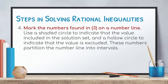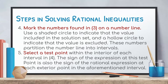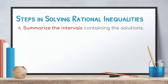Fourth, mark the numbers found in step 3 on a number line. Use a shaded circle to indicate that the value is included in the solution set and a hollow circle to indicate that the value is excluded. These numbers partition the number line into intervals. Fifth, select a test point within the interior of each interval in step 4. The sign of the expression at this test point is also the sign of the rational expression at each point in the interval. And finally, summarize the intervals containing the solutions.